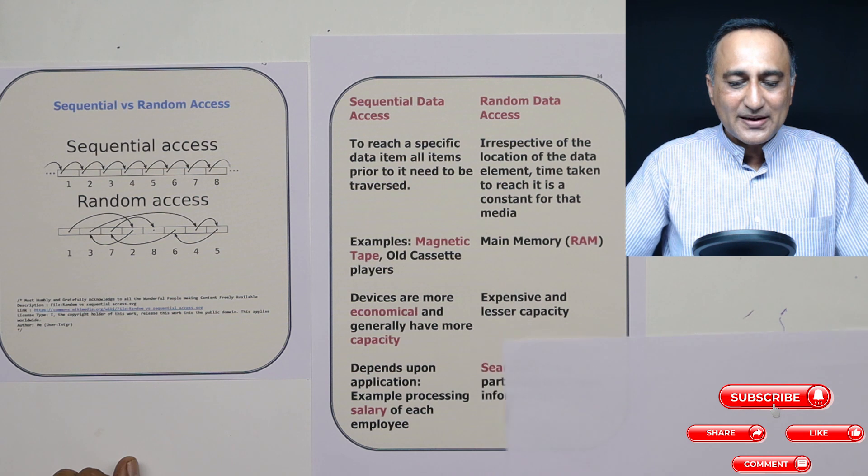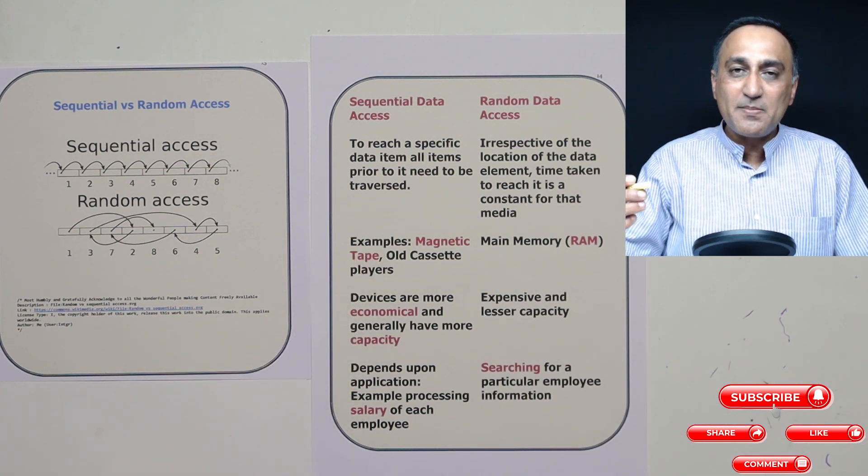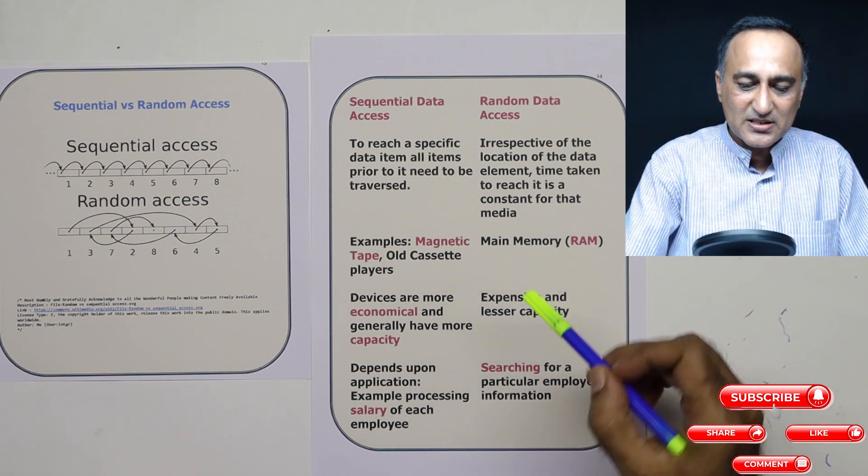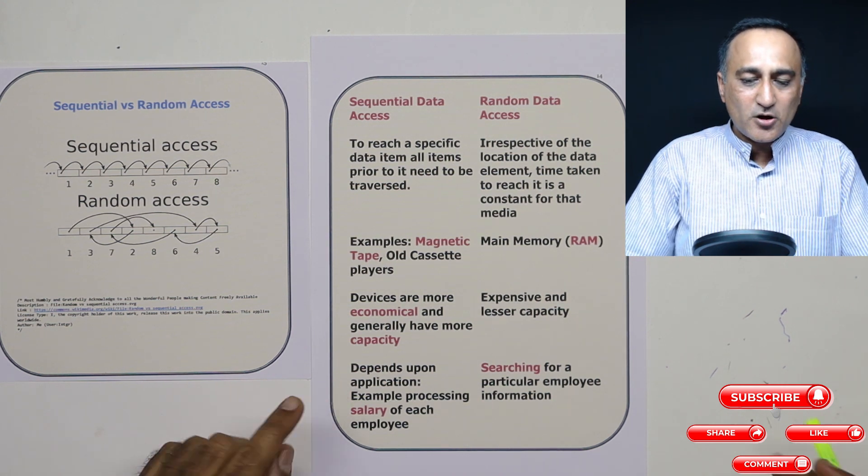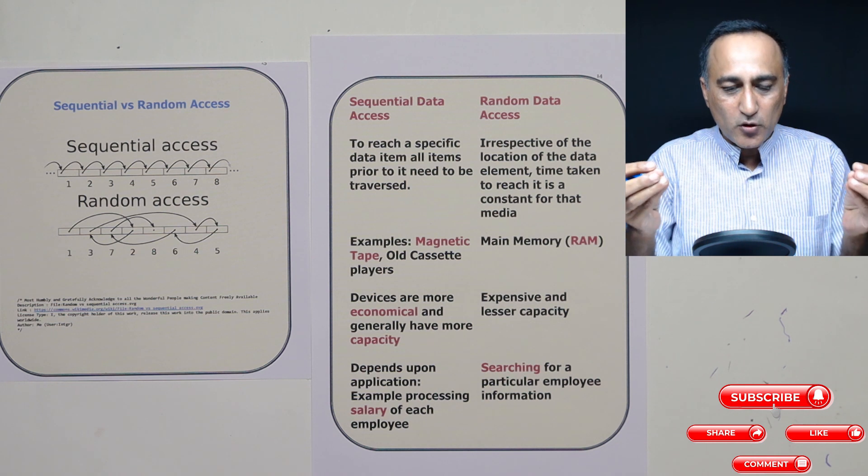Now the important part is devices which are sequential access are generally much cheaper, have a very huge capacity, whereas random access devices are expensive and have less capacity. Now we cannot say this is useful and this is useless.